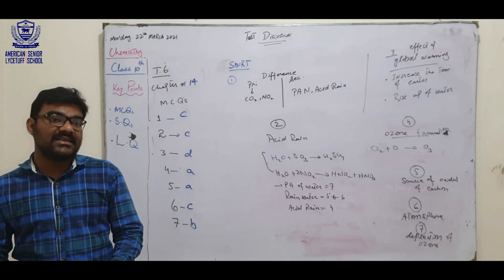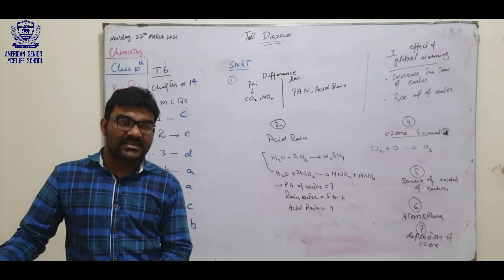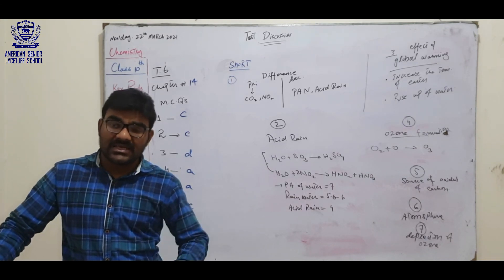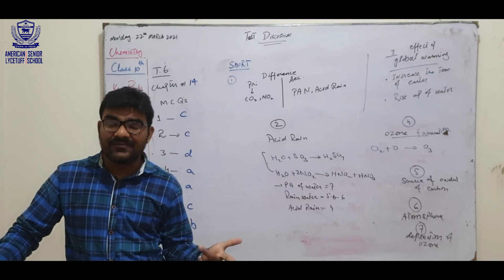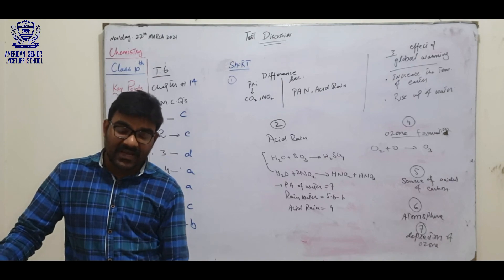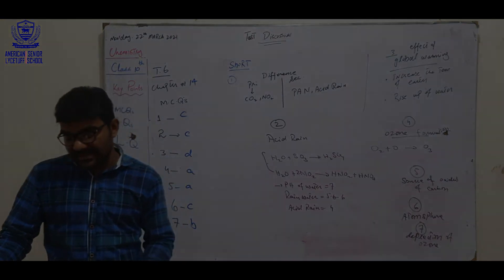Explain the effect of acid rain. Just explain the effect of acid rain. One on trees, one on aquatic life, one on human life, one on buildings. And in your book, paragraph is given. That is also the answer mentioned.